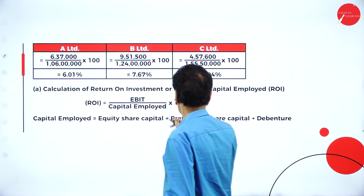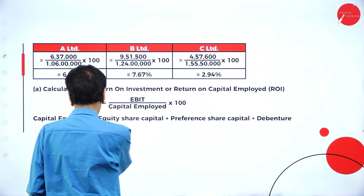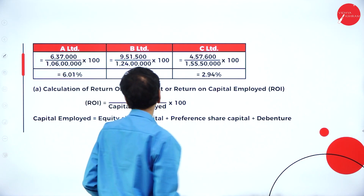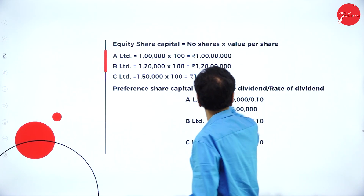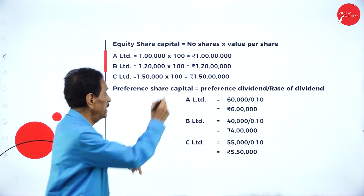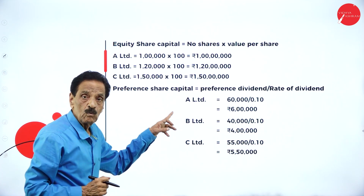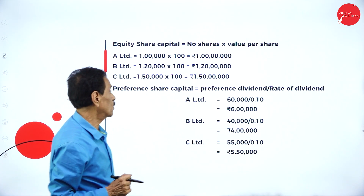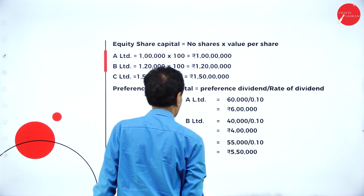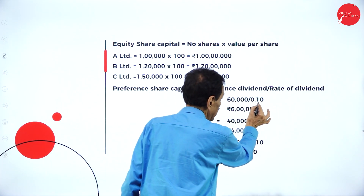Return on investment means return on capital employed. Capital employed is equity share capital plus preference share capital plus debenture. Equity share capital: 1 lakh shares at face value 100 = 1 crore for A Limited; 1 lakh 20,000 into 100 = 1 crore 20 lakh for B Limited; 1 lakh 50,000 into 100 = 1 crore 50 lakh for C Limited. Preference share capital: dividend of 60,000 divided by rate 0.10 = 6 lakh (A); 40,000 divided by 0.10 = 4 lakh (B); 55,000 divided by 0.10 = 5 lakh 50,000 (C).